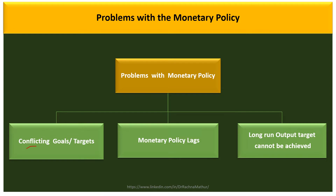The problems with monetary policy are conflicting goals, or a trade-off among the final targets. We have seen in our earlier videos that there are trade-offs among the final targets of monetary policy — achieving one target means missing the other. It is a major challenge for the policy maker to maintain a critical balance among all final targets. Also, in the long run, the output target cannot be achieved because monetary policy has no control over long-run aggregate supply, making it a quixotic goal.